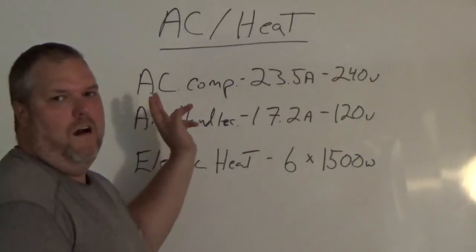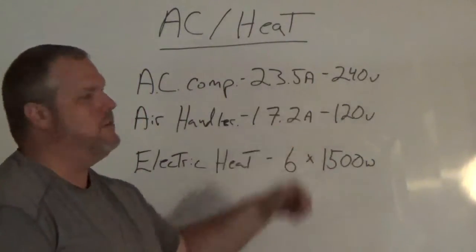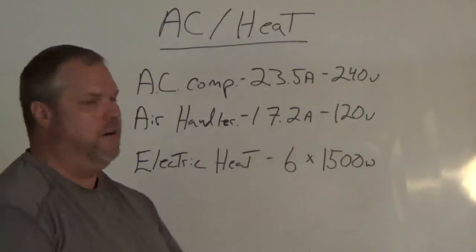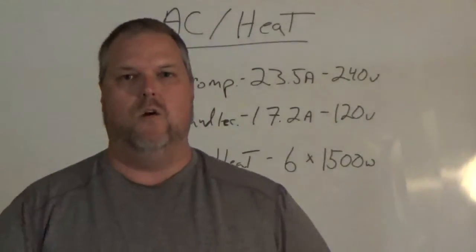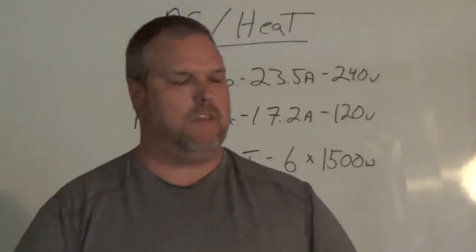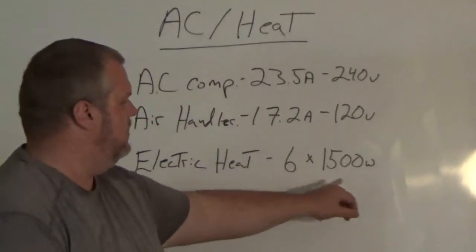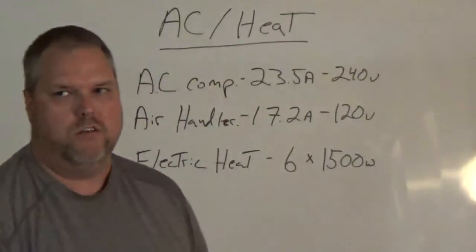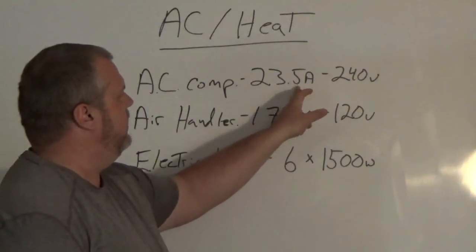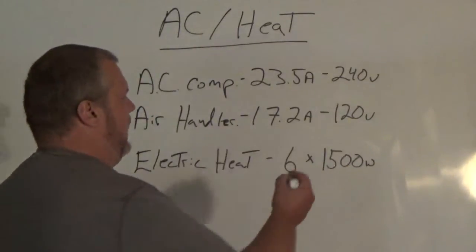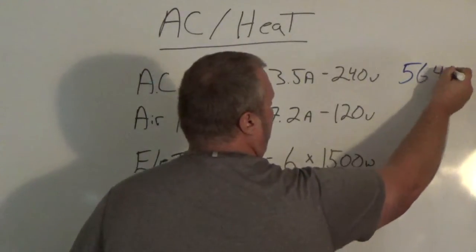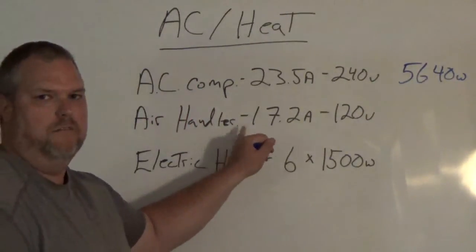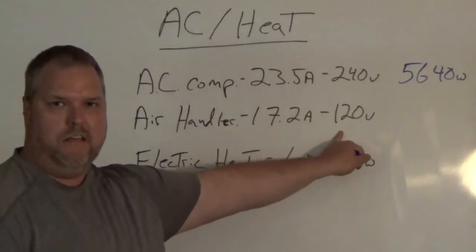AC compressor: 23.5 amps at 240 volts, very common. Air handler: 17.2 amps at 120 volts. In this case, the air handler is strictly used for AC. The electric heat: we have six pieces at 1500 watts apiece. All we're going to do is simple Ohm's law. We calculate 23.5 times 240 and we get 5,640 watts. We do the air handler: 17.2 amps times 120 gives us